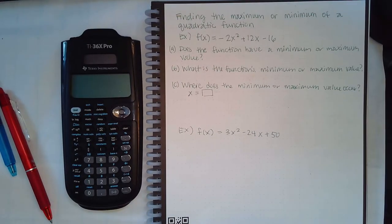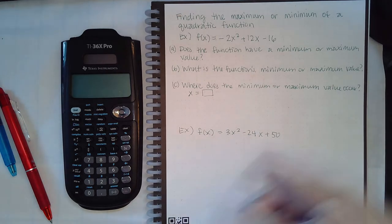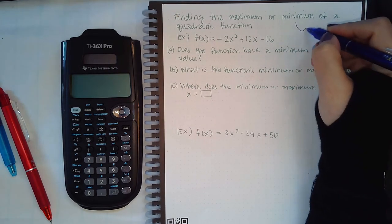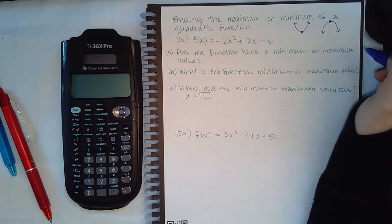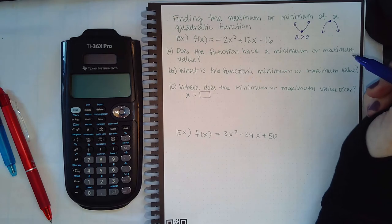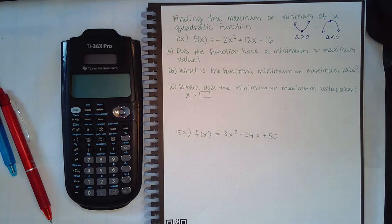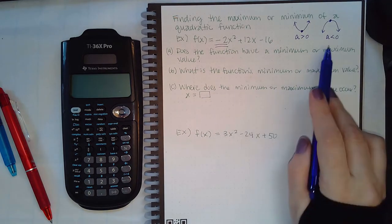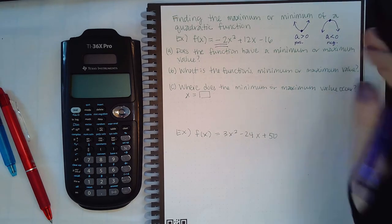Last example for module 21: find the maximum or minimum of a quadratic function. The questions are: does the function have a minimum or maximum value, what is that value, and where does it occur? Recall — if a parabola opens upward, it has a minimum; if it opens downward, it has a maximum. It opens upward if your a-value is positive, and downward if your a-value is negative. Here, a is negative 2, which means it opens downward and we have a maximum.